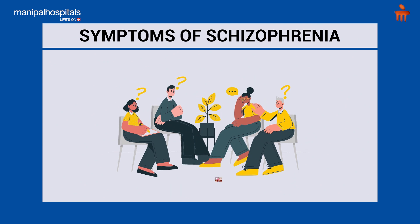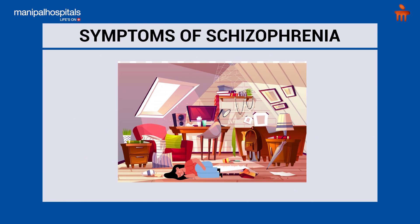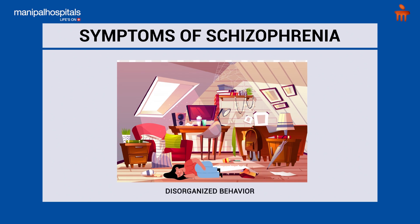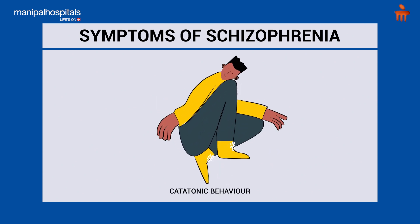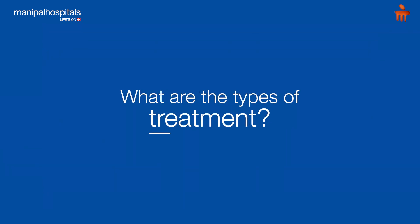Fifth is disorganized behavior or catatonic behavior. In disorganized behavior, self-care is very much impaired, and in catatonic behavior, there is loss of speech at times and they can hold on to any posture for a long period of time.